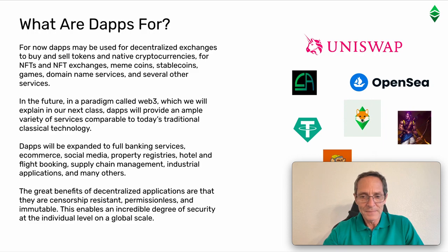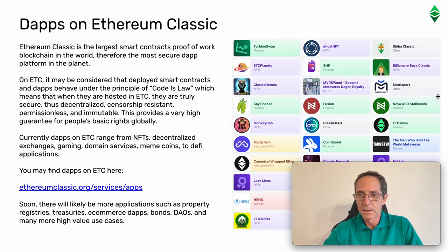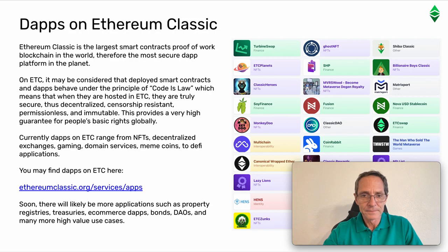The great benefits of decentralized applications are that they are censorship resistant, permissionless, and immutable. This enables an incredible degree of security at the individual level on a global scale. Ethereum Classic is the largest smart contracts proof-of-work blockchain in the world, and therefore the most secure dApp platform on the planet.